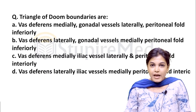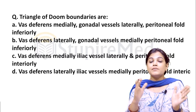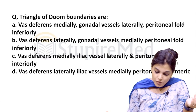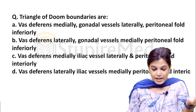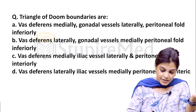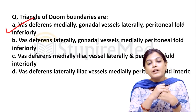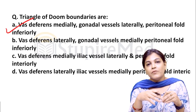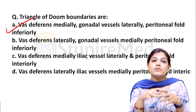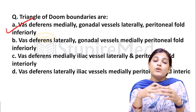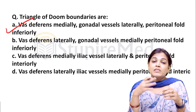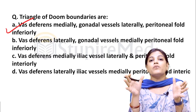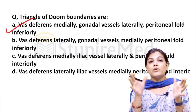The triangle of doom boundary: vas deferens is medially, gonadal vessels laterally, and peritoneal fold inferiorly — so option A is the correct answer. The contents are the external iliac artery, external iliac vein, and genital branch of the genitofemoral nerve. The clinical importance is that this triangle is important for laparoscopic groin hernia repair.